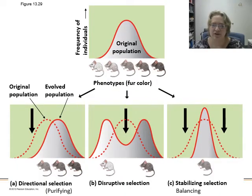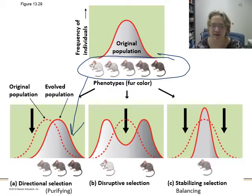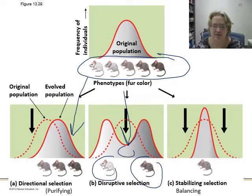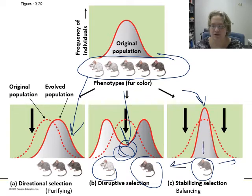Using mouse color as an example: the original population had a nice variety of colors. After a volcanic eruption covered everything in soot, darker mice hid better and lighter ones got picked off. That's directional selection. In a checkerboard environment, white or black mice do great but anything in between is easy pickings — that's disruptive selection. In a radioactive fallout landscape, you want to be a nice middle gray because being black or white makes you stand out — that's stabilizing selection.